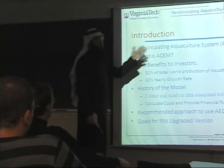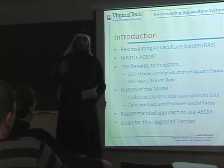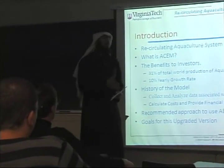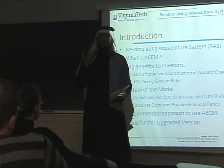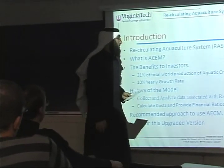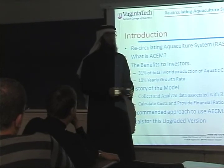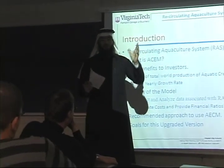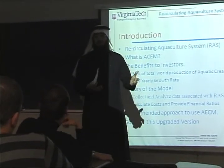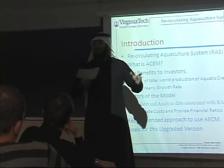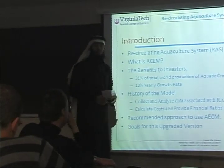We are working on the Aquacultural Economic Cost Model, the AECM. It really helps and supports managers and producers of these types of businesses, helping them make strategic decisions. The model gives them feedback about their financial ratios, their budgeting, and also forecasts — taking inputs from many sources regarding the type of plant, the type of fish, the cost of equipment, and everything — until it gives a forecast of about two to three years.